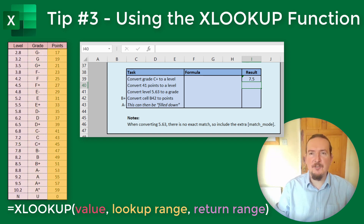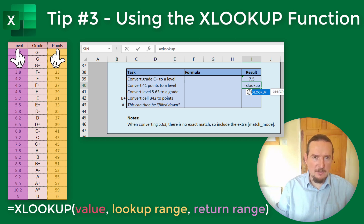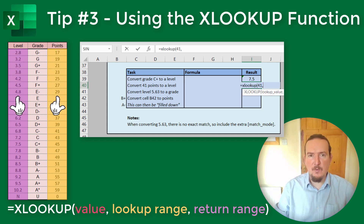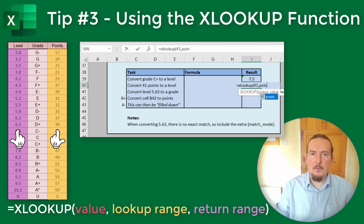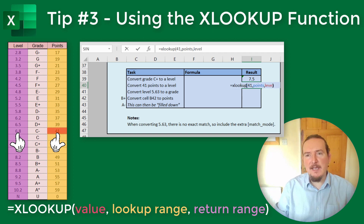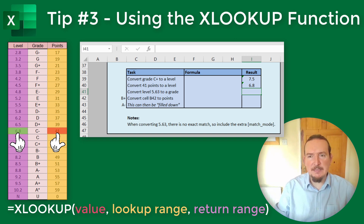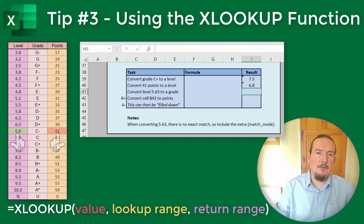Next, if I want to convert 41 points to a level, that is going to be equals XLOOKUP open brackets 41 comma points comma level, which gives me the value 6.8. Notice 41 is not in speech marks because it is a number and not text. You will see this across Excel formulas and also in programming generally — text goes in speech marks and numbers do not.